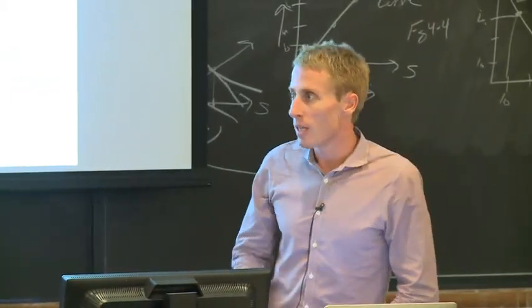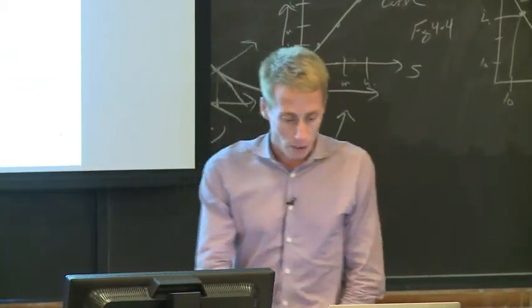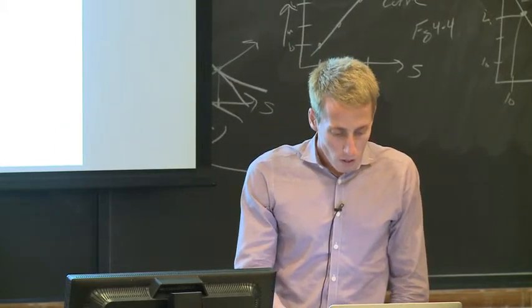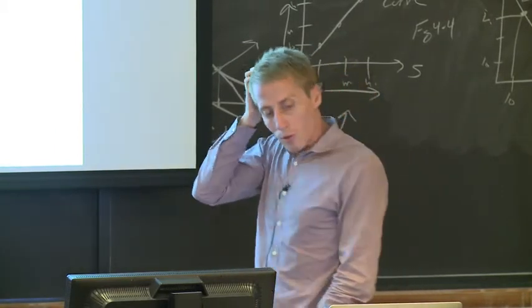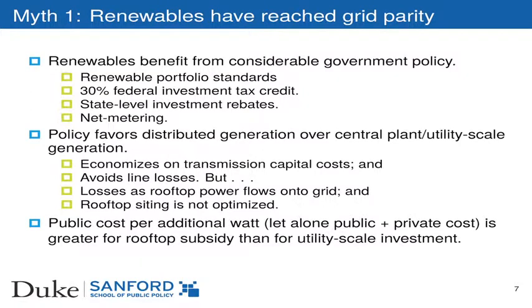And as the renewable penetration rate increases, this sort of the belly, if you will, of this duck gets steeper, requiring even more ramping by the dispatchable generation, which is costly. And so as the penetration of renewables increases, we expect the cost of integrating them, that is the cost of their intermittency, to actually go up. So it's also the case that renewables benefit from considerable government policy, and for good reason, because they're clean technologies relative to the fossil technologies. They benefit from renewable portfolio standards, as Jonas was talking about. They benefit from a 30% federal investment tax credit, state-level incentives and rebates, and net metering.